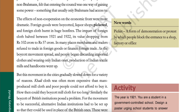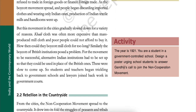Picket: a form of demonstration or protest by which people block the entrance to a shop, factory, or office. But the movement in the cities gradually slowed down for a variety of reasons. Khadi cloth was often more expensive than mass-produced mill cloth, and poor people could not afford to buy it. Similarly, the boycott of British institutions posed a problem — alternative Indian institutions had to be set up so that they could be used in place of British ones. These were slow to come up, so students and teachers began trickling back to government schools and lawyers rejoined work in government courts.